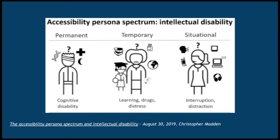Accessibility is often on a spectrum extending from permanent to temporary to situational. Permanent disabilities can include cognitive disabilities such as ADHD or autism, physical disabilities such as being in a wheelchair or having mobile impairments, or disabilities of the senses — being blind or deaf. Temporary disabilities include a broken arm or temporary cognitive impairment from mental distress. Situational disabilities can include interruptions, distractions, and external noise.